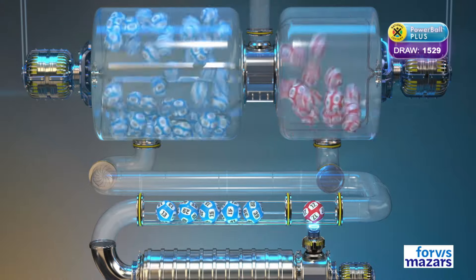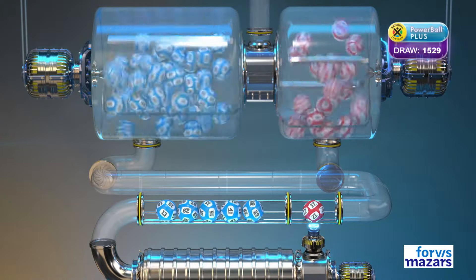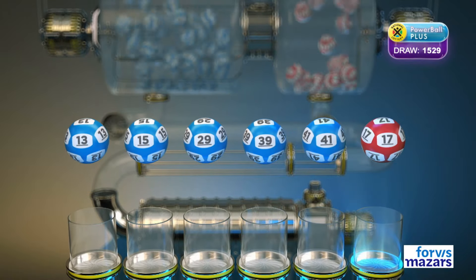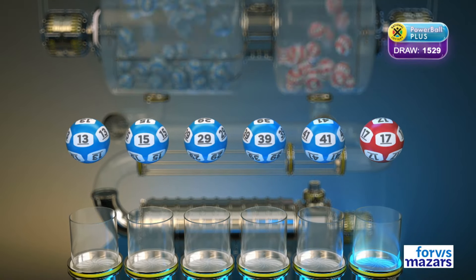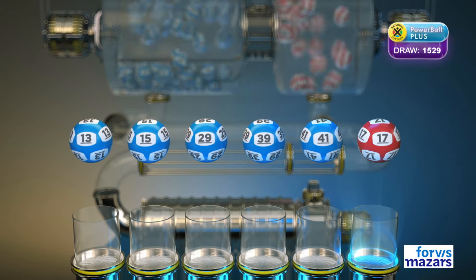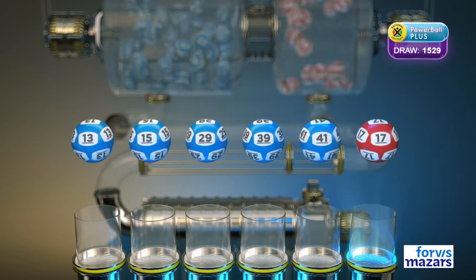And the Powerball is seventeen. Let's recap these numbers in numerical order: Fifteen, Twenty-nine, Thirty-nine, Forty-one. And the Powerball is seventeen.